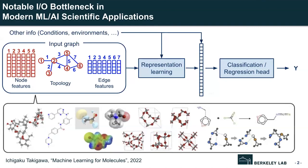Modern scientific applications are leveraging the potential of machine learning and artificial intelligence to accelerate scientific discovery. This trend is prevalent in multiple scientific domains such as drug discovery, quality design, and antibody engineering. For instance, a graph neural network is now used for chemical compound modeling simulations instead of physics-based computational approaches, where each molecule is represented as a small graph structure used as input for GNN training.